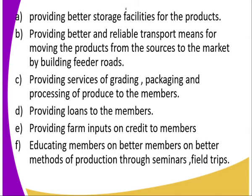Number two: providing better storage facilities for the product. After the farmer produces the commodity, he may not have storage facilities, so the work of the cooperative is to ensure that the commodity produced by the farmers is stored properly and offered storage services until it is ready for the market. Number three: providing better and reliable transport means for moving the product from the source to the market by building feeder roads. The cooperatives are responsible for constructing feeder roads to ensure goods reach the market at the right time.